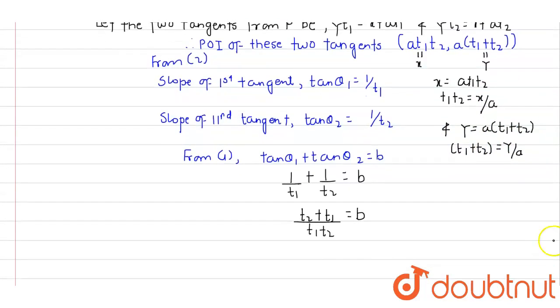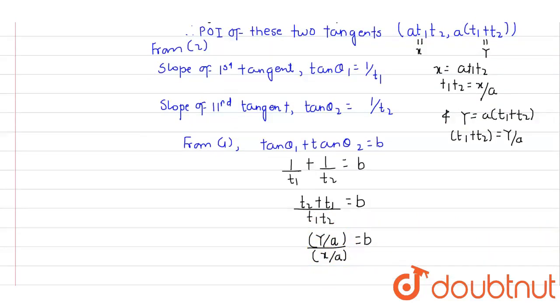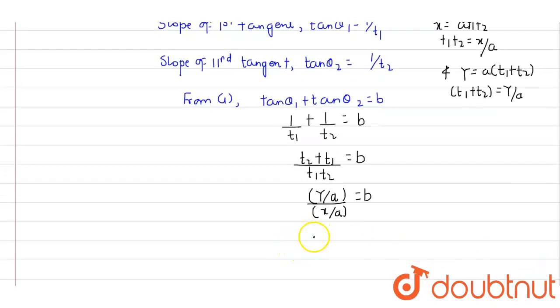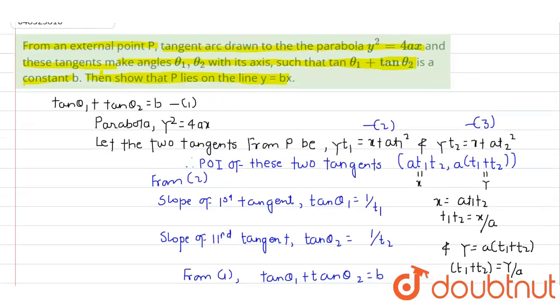So (t₁ + t₂)/(t₁t₂) becomes (y/a)/(x/a) = b. The a cancels from numerator and denominator, so we get y/x = b.